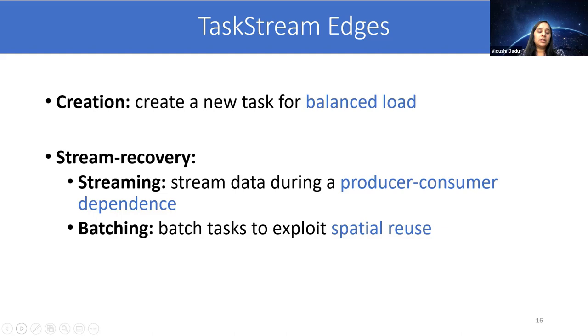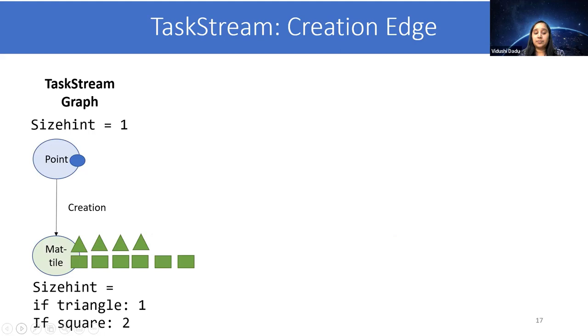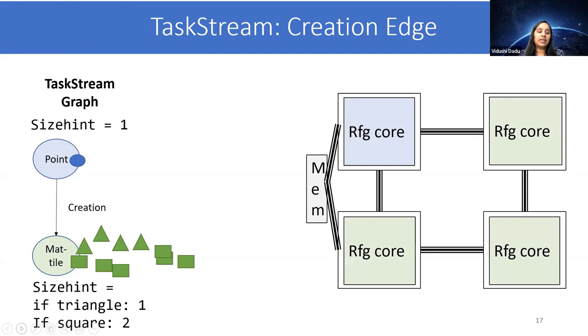Let's start with creation. Here, we extract part of the TaskStream graph of Cholesky, where we look at point to matrix task. The different instances of matrix task can be variable size. Here we introduce an annotation of size hint that can specify the relative size of a task instance. For point, it will always be one, so it's a constant, while for matrix it can be a triangle or a square, giving it value of 1 and 2. Without any size hint, all these task instances would be dealt with similarly, and they could be scheduled so that some cores get too much work like three squares, while other cores can get much less work. However, if the scheduler is trying to optimize for the total size of work that each core gets, then the distribution would look something like this, where the cores with more tasks would get more triangles so that the total amount of work is similar.